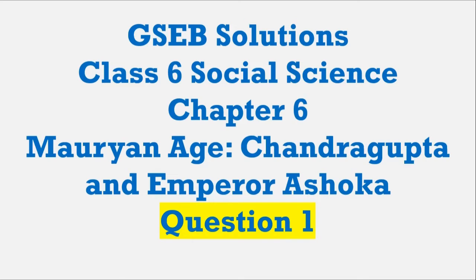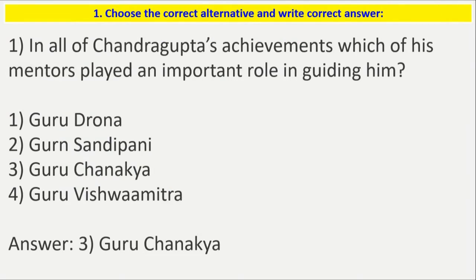Today we will see a video related to GSEB solution for class 6 social science, chapter 6: Mauryan Age — Chandragupta and the Emperor Ashoka. Let's solve question 1 of your textbook. Question 1 says: choose the correct alternative and write the correct answer.